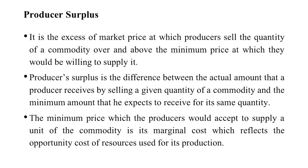This difference is used to calculate the producer surplus — the price at which he is willing to supply the commodity and what he actually receives after selling the quantity over and above the minimum price. Producer surplus is essentially the difference between the actual amount a producer receives by selling a given quantity of a commodity and the minimum amount he expects to receive for that same quantity.